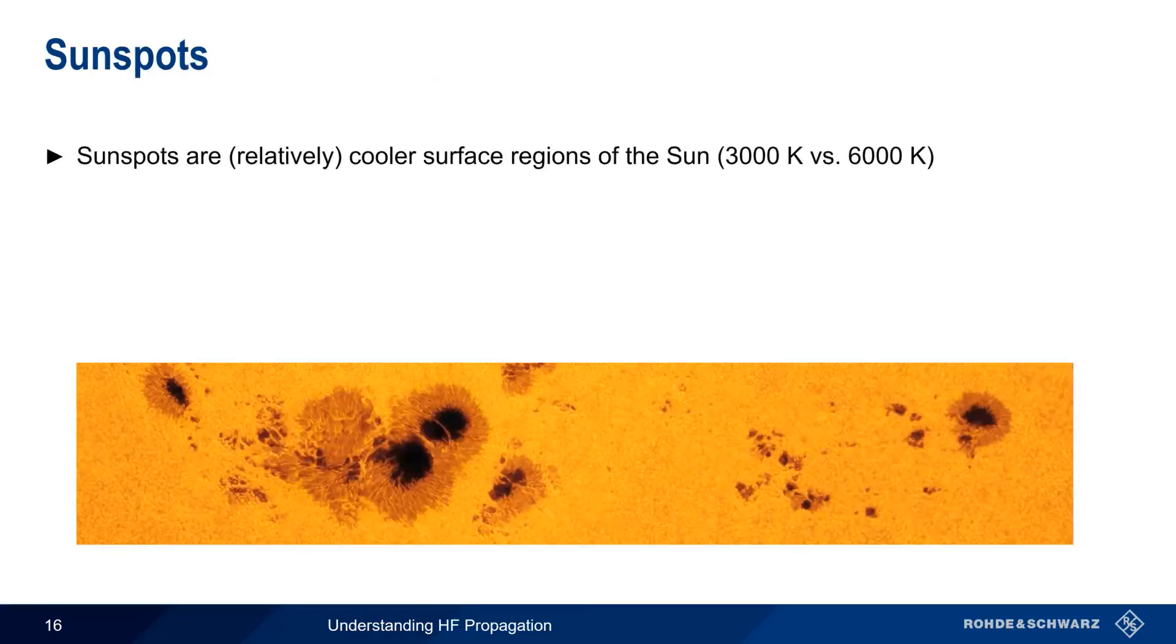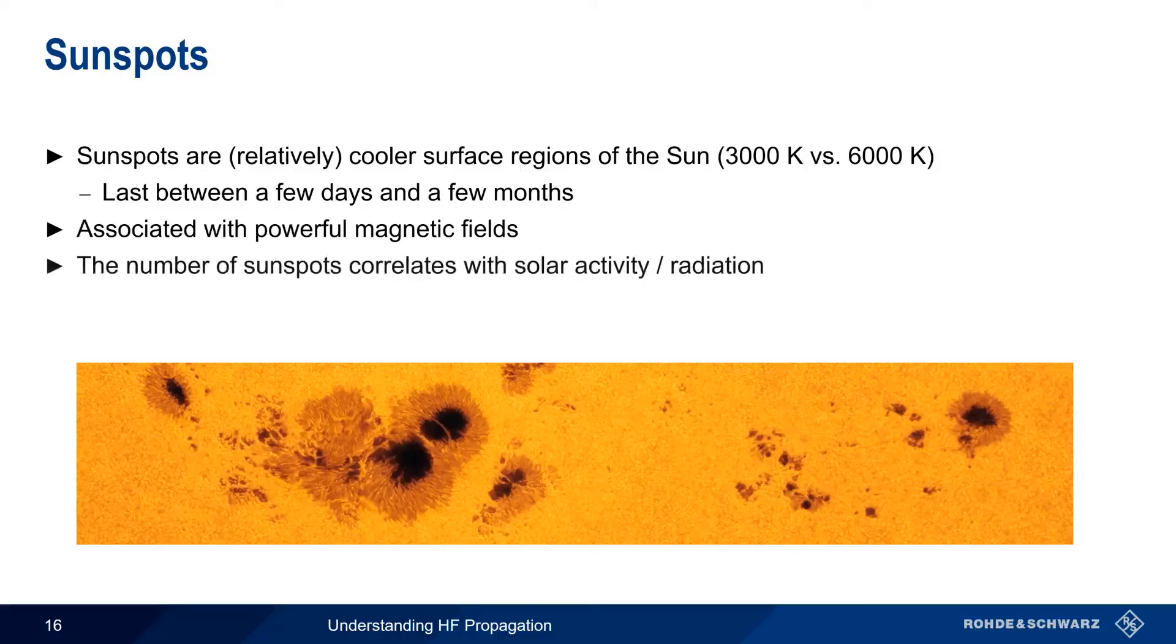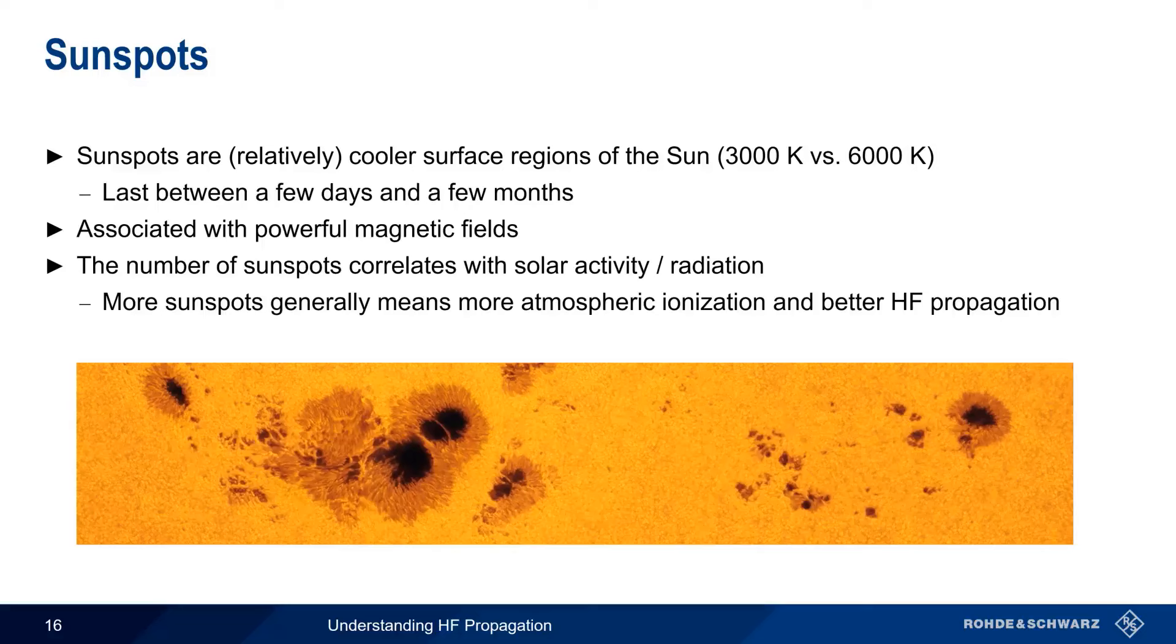Sunspots are, relatively, cooler surface regions of the sun. Relatively, in this case, means they have temperatures of about 3000 Kelvin versus the normal 6000 Kelvin seen elsewhere. After they appear, sunspots last between a few days and a few months. Sunspots are associated with powerful magnetic fields, and these fields affect how much radiation is given off by the sun. The greater the number of sunspots, the higher the level of solar activity and radiation. And because of this, more sunspots generally means higher atmospheric ionization, a higher MUF, and better overall HF propagation.